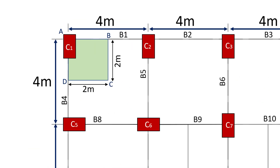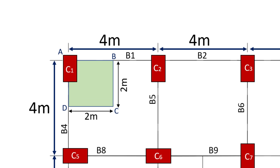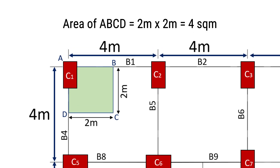According to the approximate method, the total load on the column is equal to the load transferred from the surrounding area ABCD plus the self-weight of the column. The dimensions of area ABCD cover half the length of its connected beams B1 and B4. The width is half of B1, which is 2 m, and the length is half of B4, which is also 2 m. Hence, the area of ABCD is 2 m x 2 m = 4 m².